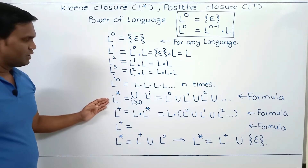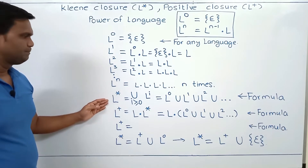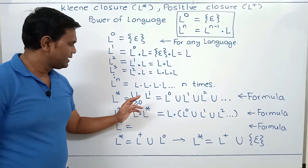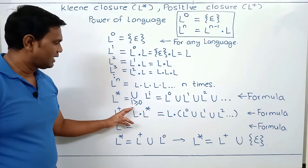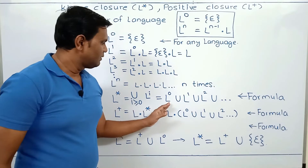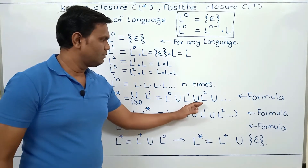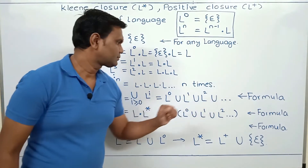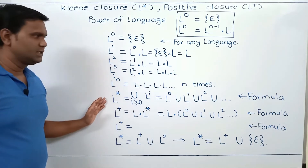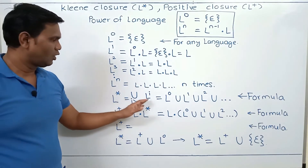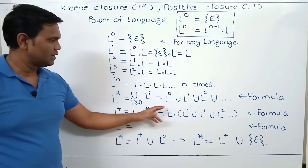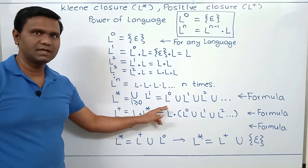Now this is the formula for Kleene closure of the language. L star is the union of L power i such that i is greater than or equal to 0, which is L power 0 union L power 1 union L power 2 and so on. So in the Kleene closure of the language, we make union of all L power i for i greater than or equal to 0, and here we start with L power 0.